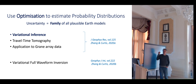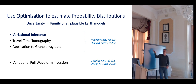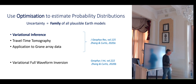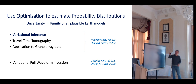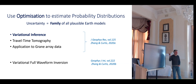We'd like to estimate these probability distributions — which are random functions in a sense — but use the optimization libraries available to us. The reason is that these optimization libraries are plentiful, well-studied, and we understand their convergence characteristics far better than we do random sampling algorithms.